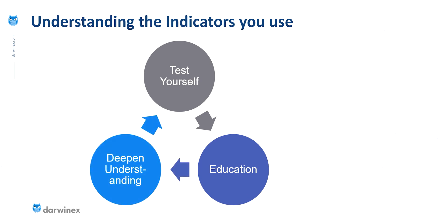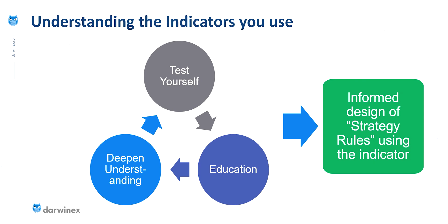Studying the price data alongside the indicator data in this way is the part of the process that I call the education. From this, you can obviously get a much deeper understanding of the patterns that are produced by the indicator that are indicative of different patterns in the underlying price action, and therefore you're deepening your understanding. What I recommend is that you then test yourself again on some new price data that you've never seen before. Use the script to take you to a random location, and then go through this whole cycle again and again. After you've tested yourself, go back, look at the price data to see how well you did. Wherever you got it wrong, educate yourself in terms of how that indicator is actually behaving. When you've been around this cycle enough times, you're then in a position to be able to design your strategy's rules based on this indicator.